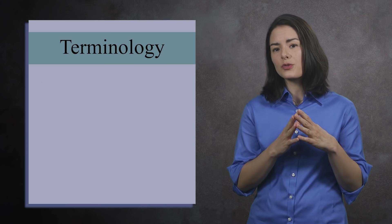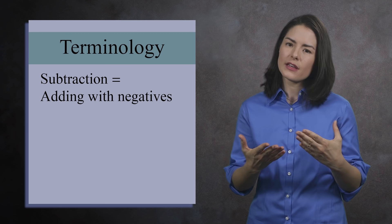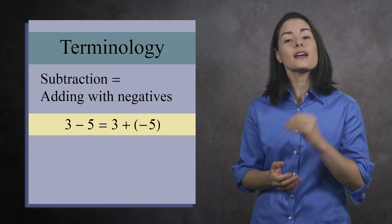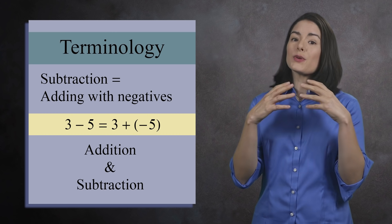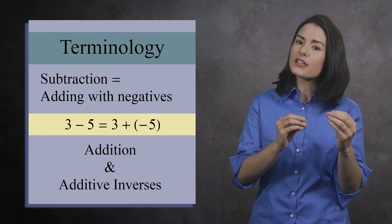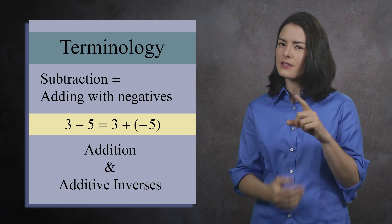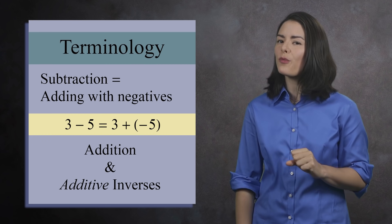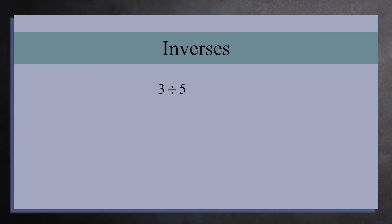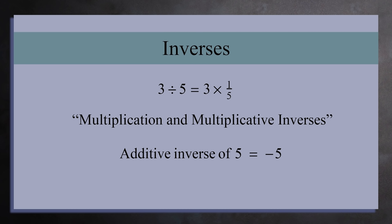One thing we've talked about before, but it bears repeating, is that in abstract algebra, subtraction is actually adding with negatives. For example, 3 minus 5 is the same as 3 plus negative 5. So instead of saying you can add and subtract, we say there's addition and additive inverses. Notice that word, additive? That's because there is more than one kind of inverse. For example, 3 divided by 5 is the same as 3 times 1 fifth. So instead of saying you can multiply and divide, in abstract algebra we say there's multiplication and multiplicative inverses. The additive inverse of 5 is negative 5. The multiplicative inverse of 5 is 1 fifth.